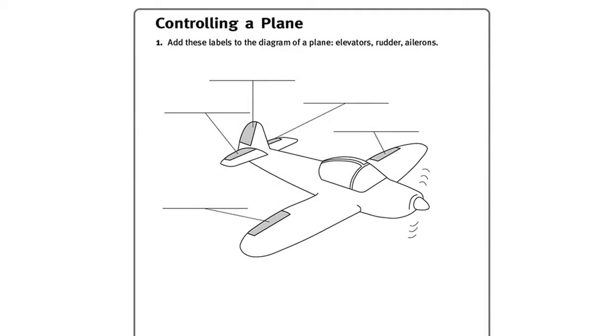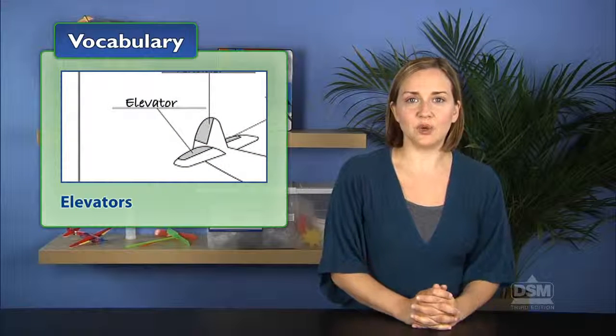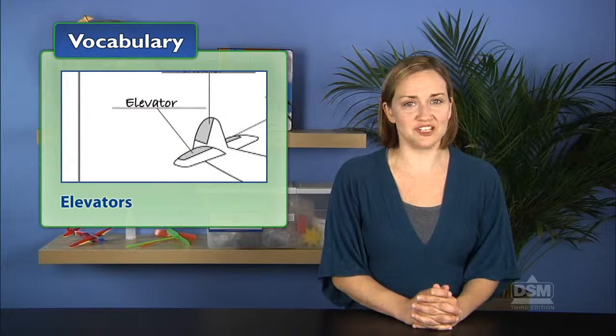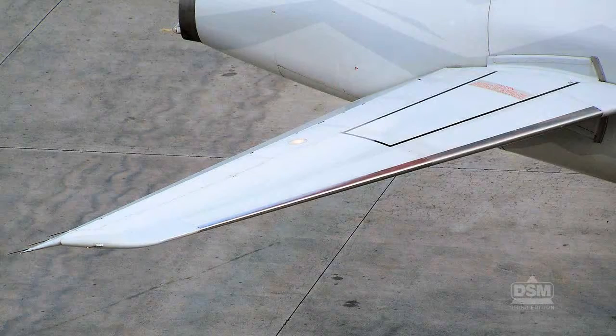Next, bring students' attention to the diagram of the plane on Part A of their activity sheet. Point out the elevators, or the flaps located on the horizontal stabilizers of the tail assembly. Explain that the elevators control the up and down movement of the aircraft.